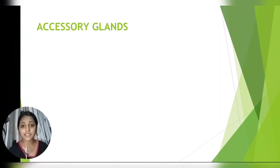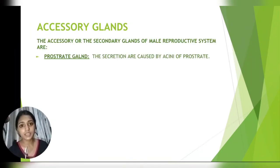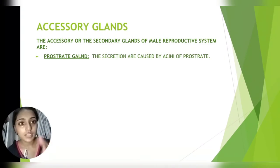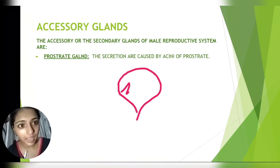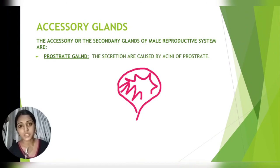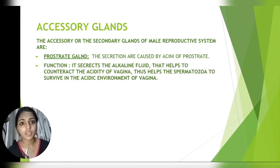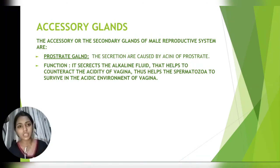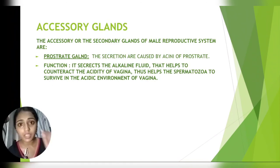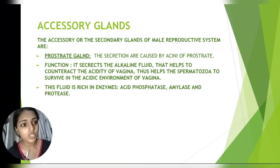Now we will discuss the accessory glands associated with the male reproductive system. The first accessory gland is the prostate gland. Its secretion is produced by villi-like structures called acini that secrete prostatic fluid. The prostate gland secretes an alkaline fluid that helps to counteract the acidic medium of the vagina, helping spermatozoa to survive. This fluid is rich in enzymes like acid phosphatase, amylase, and proteases.